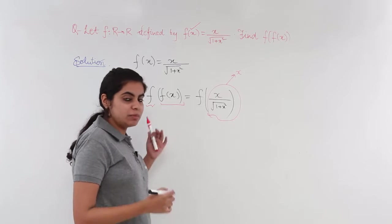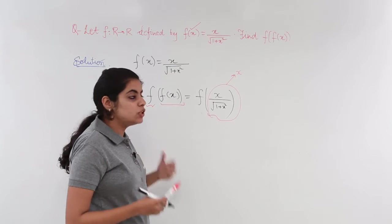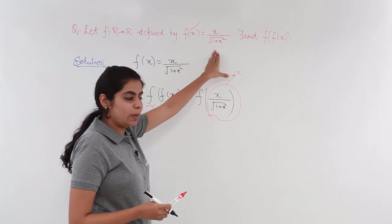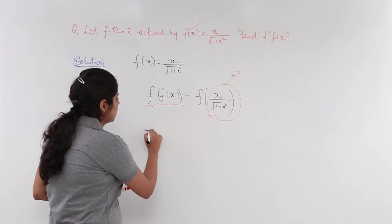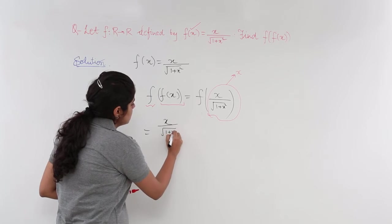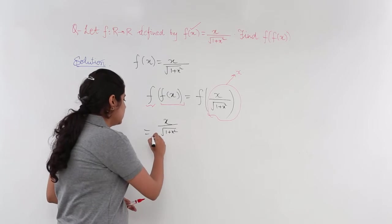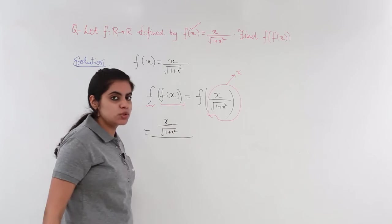So, the numerator now becomes what? We have x upon under root 1 plus x square and we need to solve it for this question. It becomes x upon under root 1 plus x square in the numerator and the denominator is a bit lengthy. So, we need some more space.